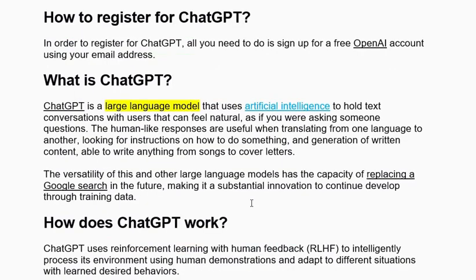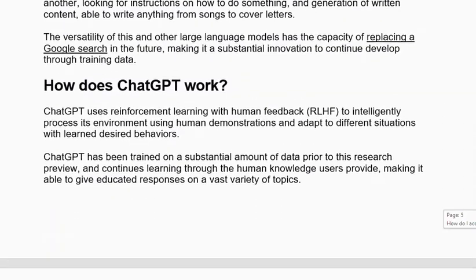The next question is: What is ChatGPT? This is mostly for beginners who do not know what ChatGPT is. It is a large language model that uses artificial intelligence to hold text conversations with users that can feel natural. You can give your prompt in the chat and ChatGPT gives your answer in written form. This and other language models have the capacity to potentially replace Google Search in the future, making it a substantial innovation that continues to develop through training data.